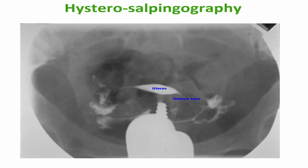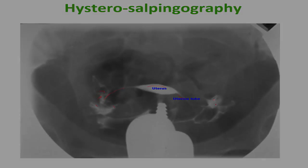Then, hysterosalpingography — radiopaque material is injected through the cervix of the uterus to visualize the cavity of the uterus, the body of the uterus, and the fallopian tubes. This is a test to determine if the fallopian tubes are patent or not — the material is expelled into the peritoneal cavity, which is called spill. Thank you.